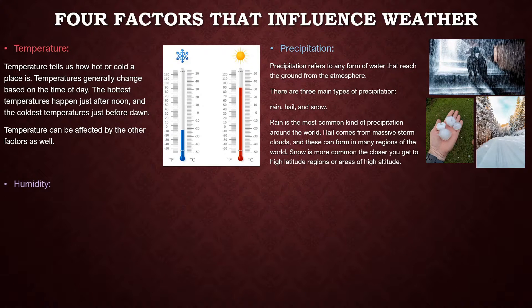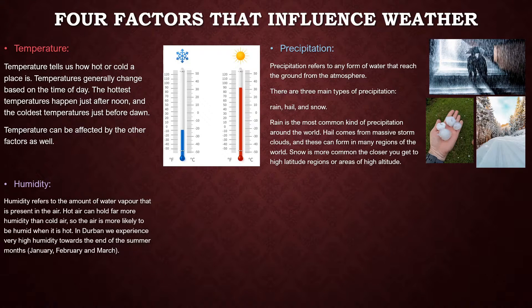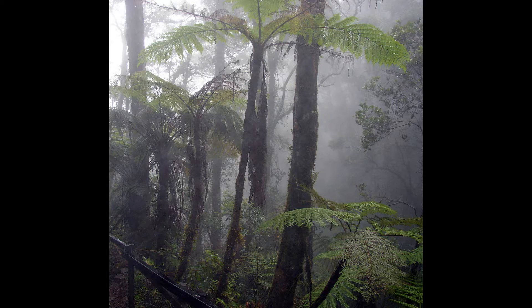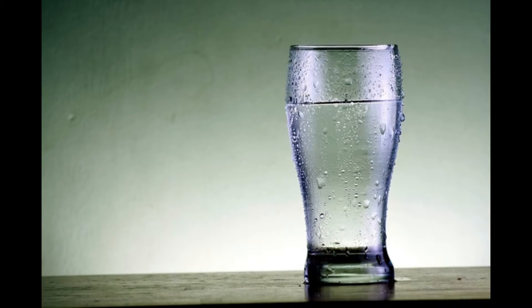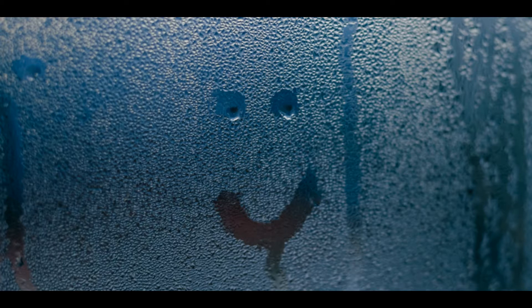Humidity refers to the amount of water vapor that is present in the air. Air at any temperature can only hold a certain amount of water vapor — the higher the air temperature, the more water vapor it can hold. Therefore, if you live in a place where it is extremely humid, it is pretty likely that it is extremely hot as well. A good indicator of how humid the air is, is to have an ice cold drink. The longer the surface of the glass is in contact with the air, the more likely it is that water vapor will condense on the surface. The higher the humidity, the longer the condensation will happen. If little or no condensation occurs, the air is extremely dry — or your drink isn't cold enough.